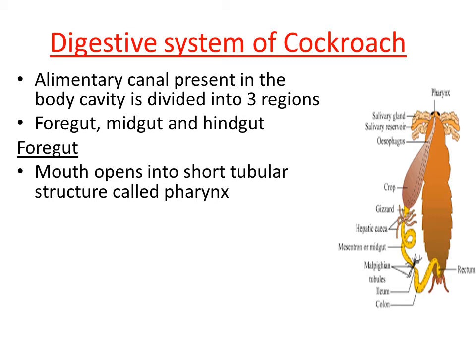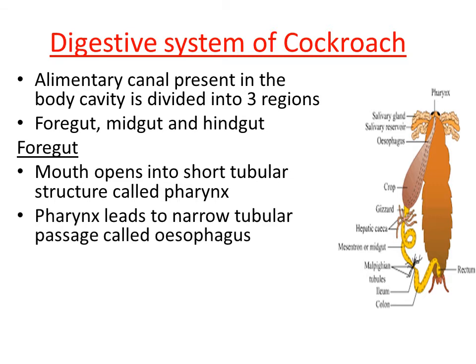Pharynx is a short tubular structure present very next to the mouth. The pharynx contains pharyngeal glands which secrete mucus. This mucus makes the food slippery so that food can easily move into the further part of the alimentary canal.